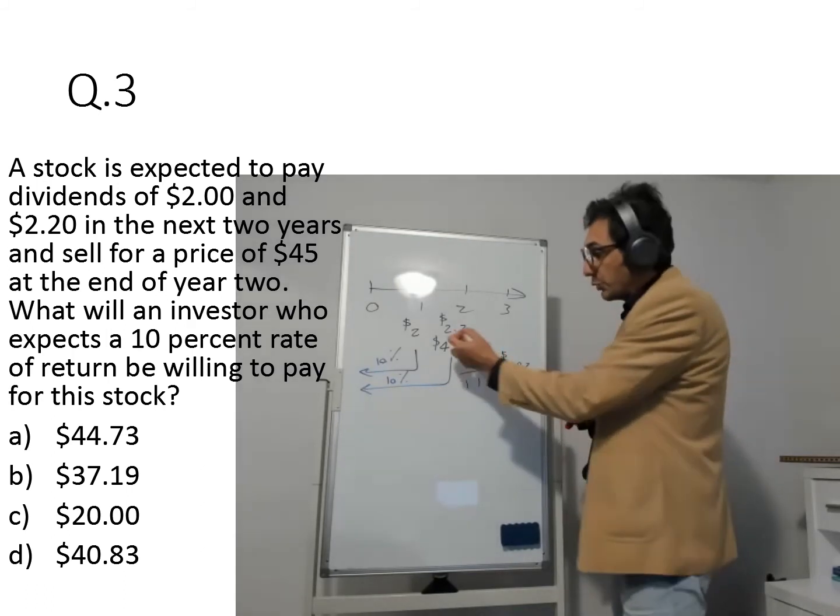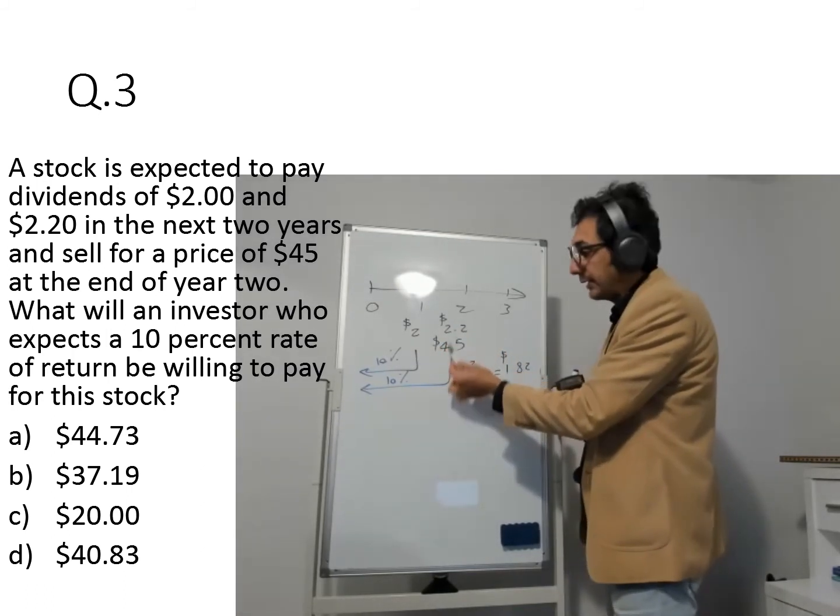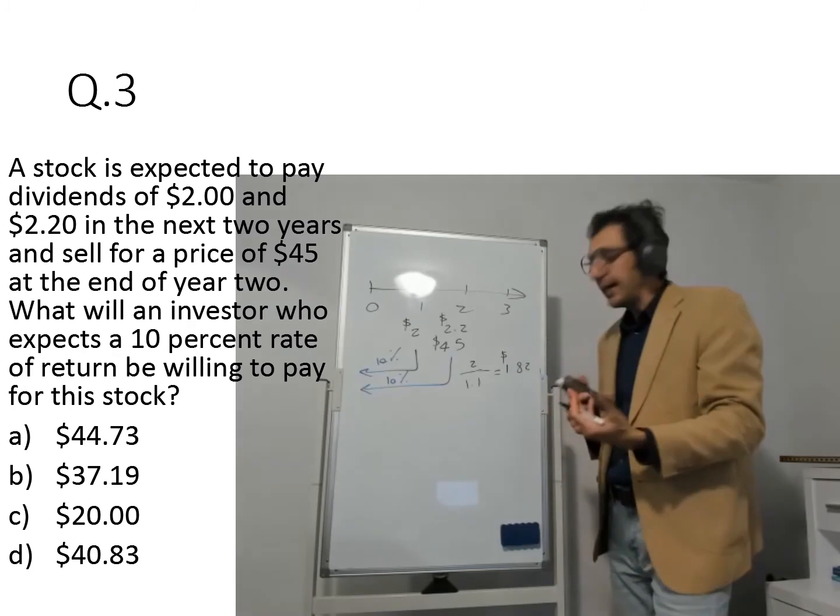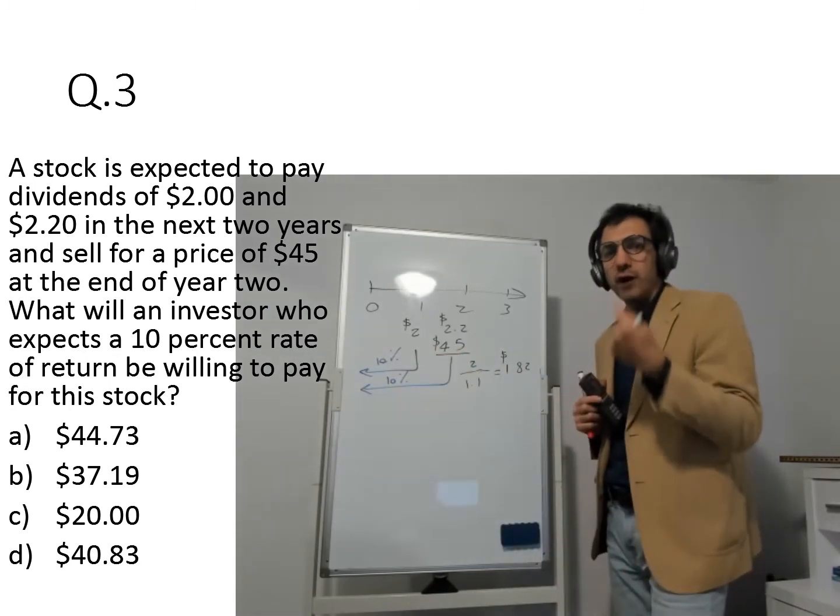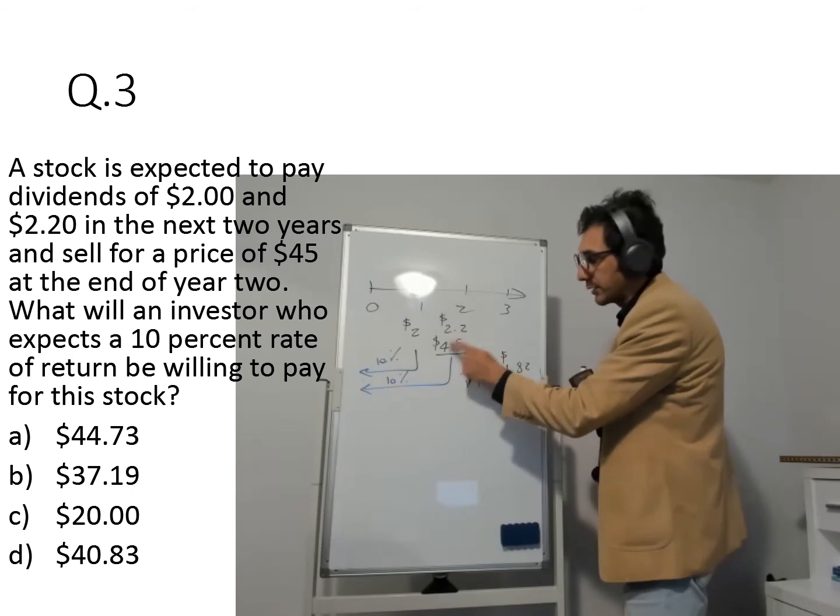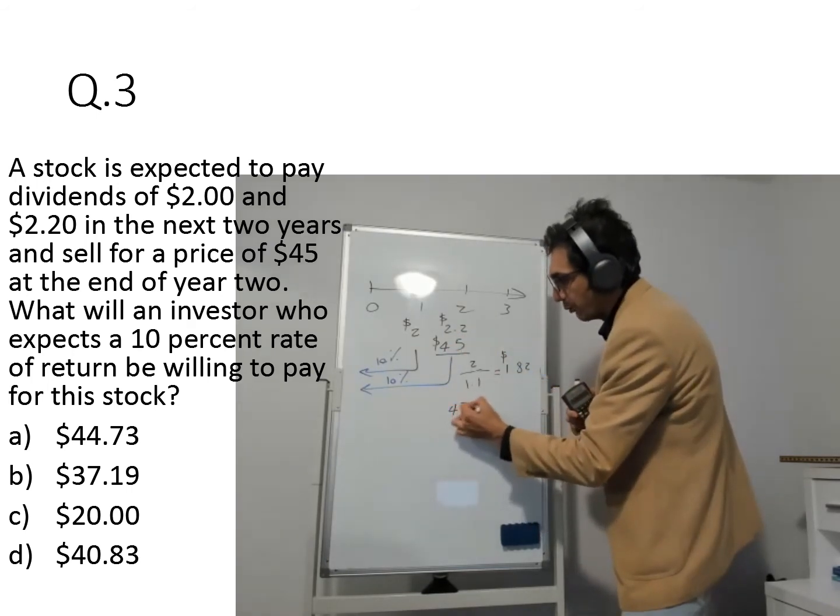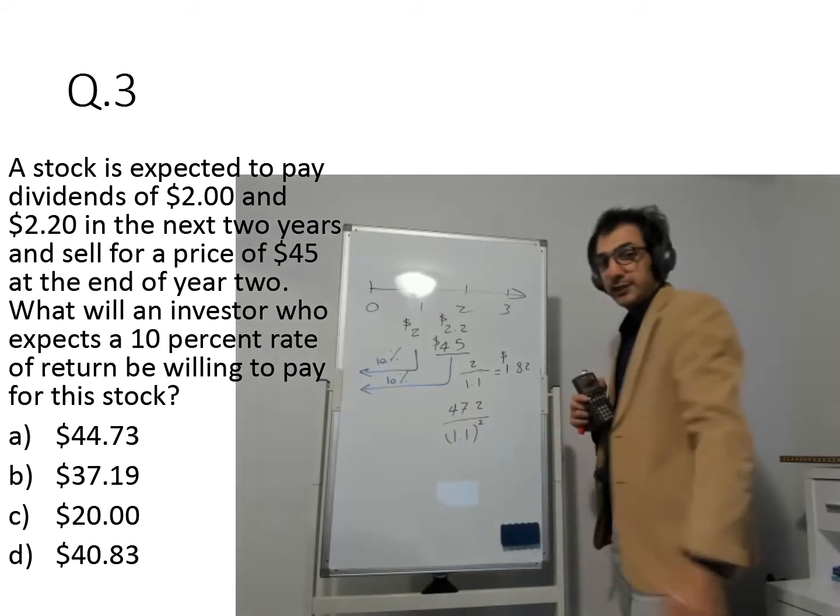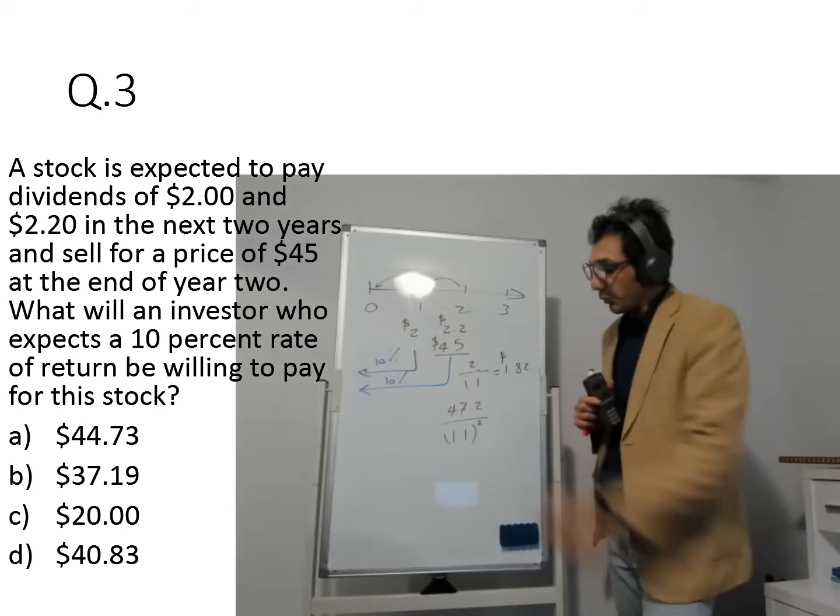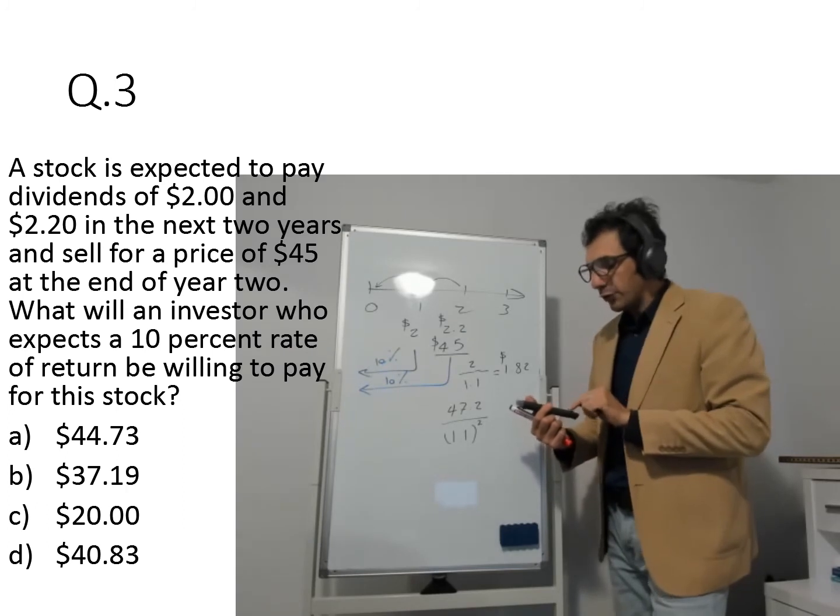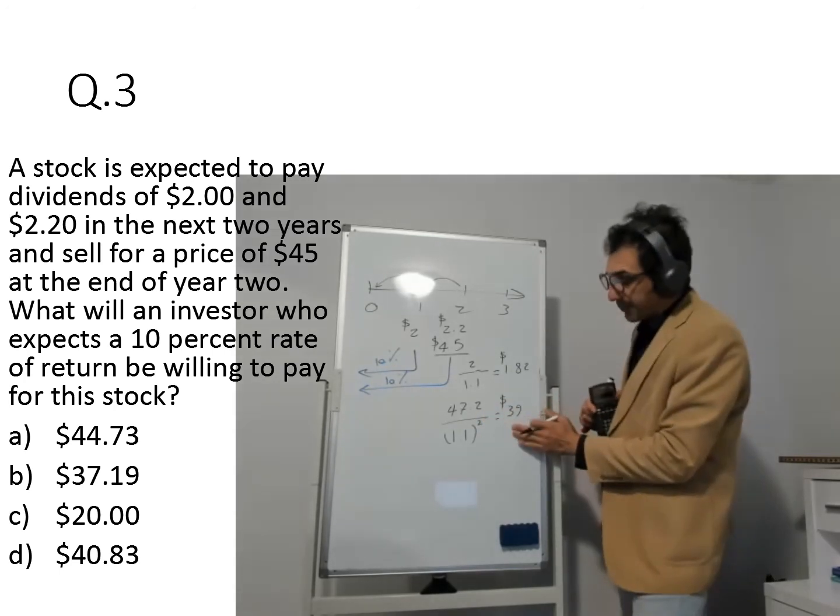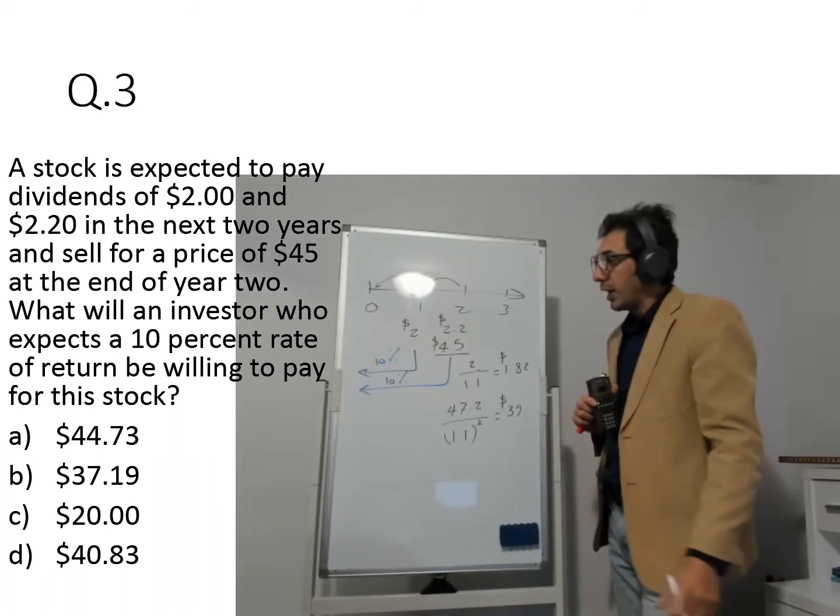Now, when it comes to the second year, you see you have two cash flows, 2.2 dividend and the selling price. Since both are happening at the end of year two, you can add them and just find the present value of one number. So $2.20 plus 45, that's 47.20 divided by 1.1 to the power of two. This is why because you're talking about discounting back for two periods, which is 1.21. So I'm dividing 47.2 by 1.21, which gives me $39. So this is the present value of the cash flow you receive two years from now.